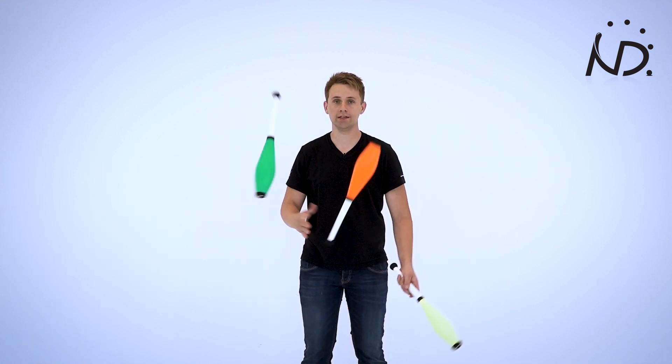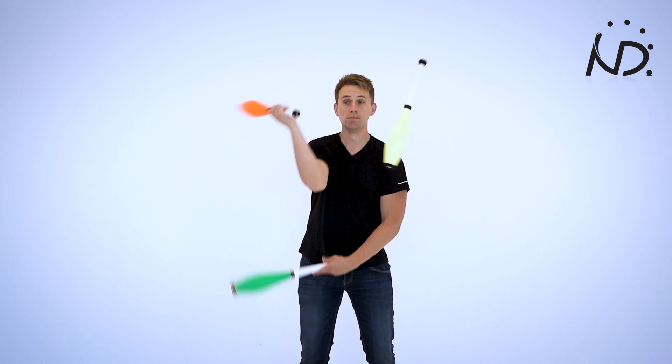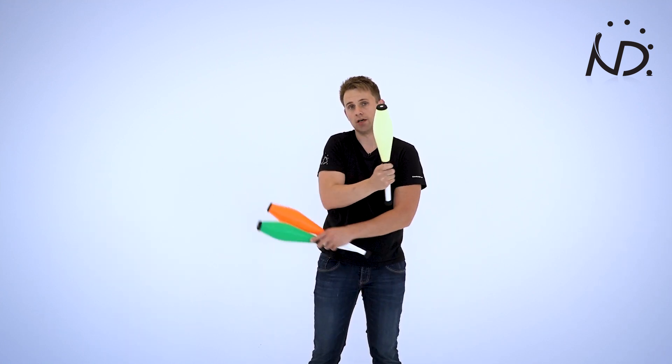So it looks like this. So I threw it under my arm, and when I did so, look at the green one again. I moved the other club out of the way. So with this club, I kind of moved it in this motion out of the way from the club that I threw under my arm.